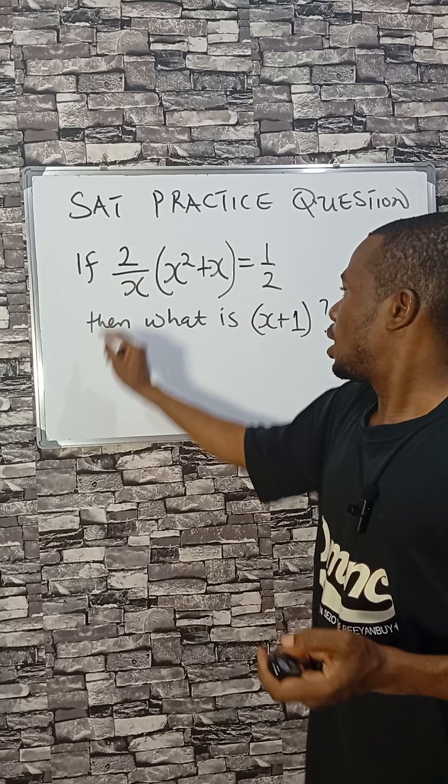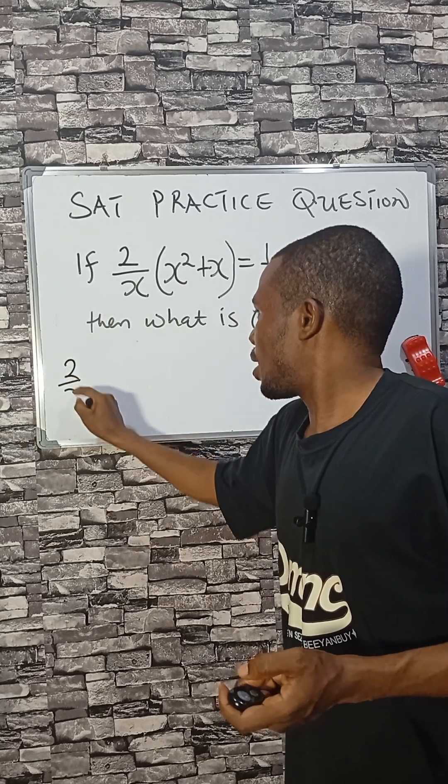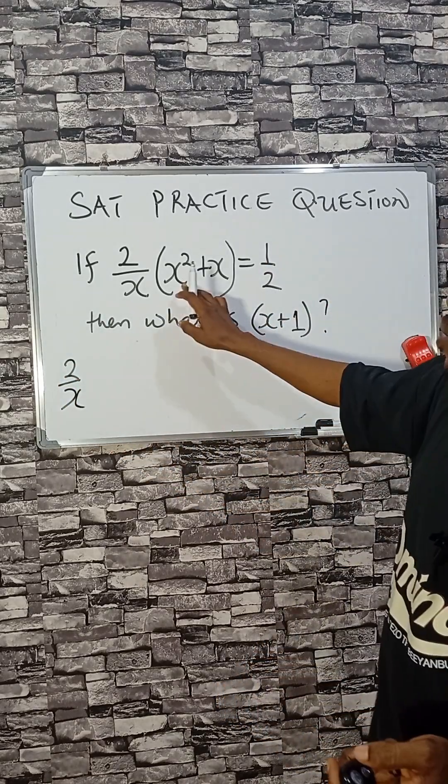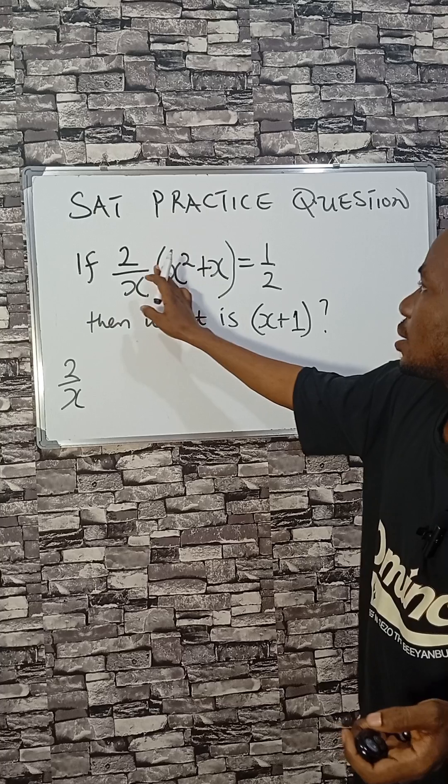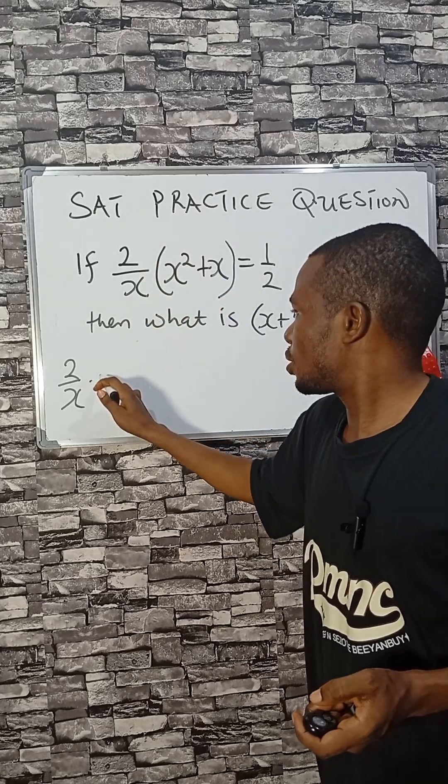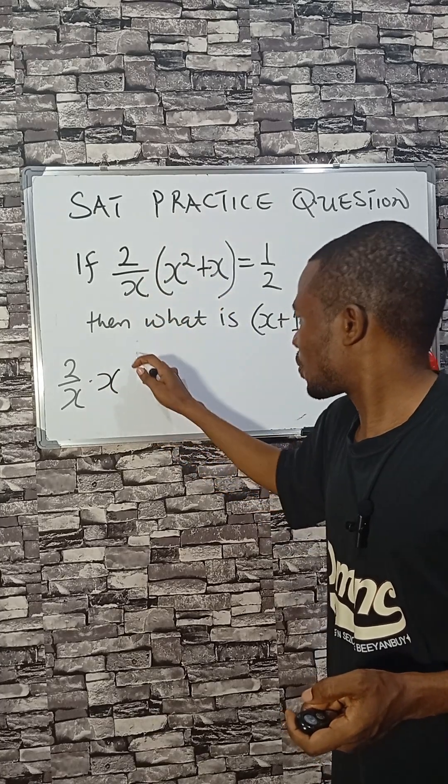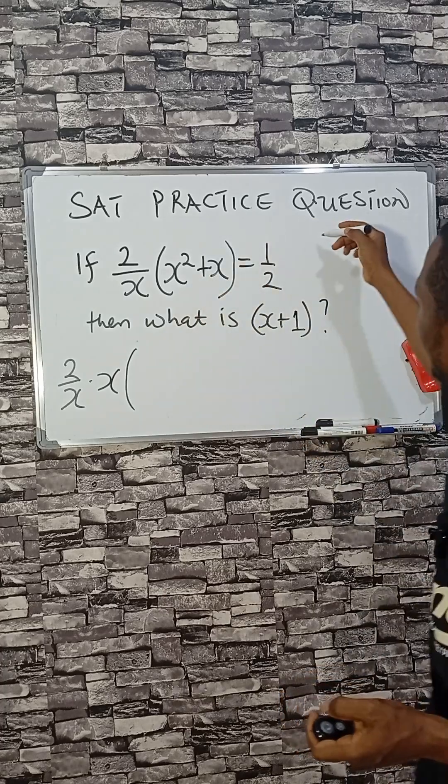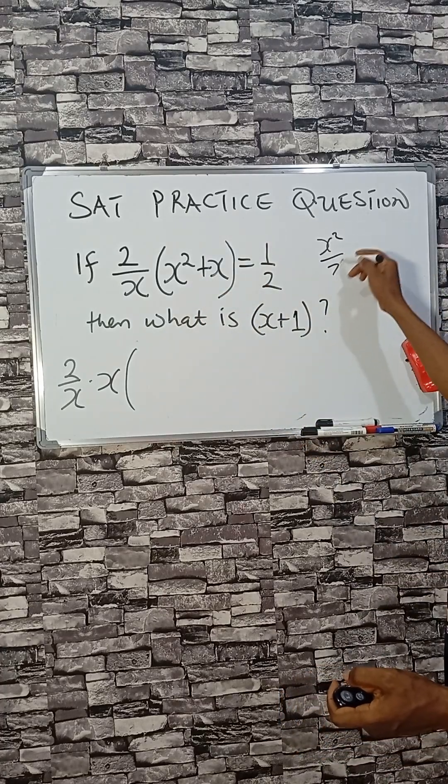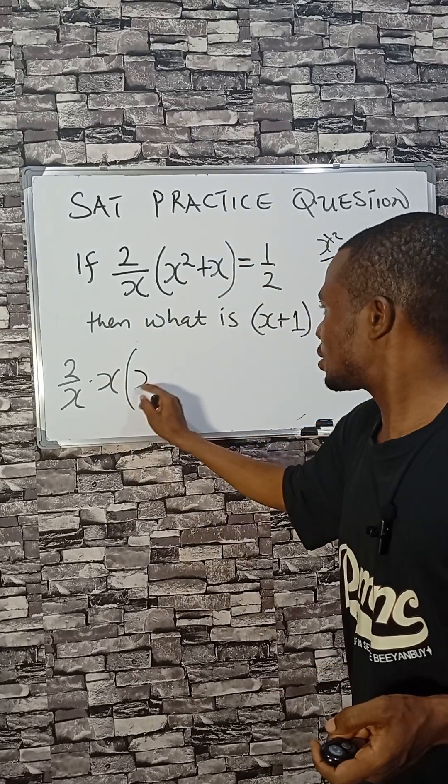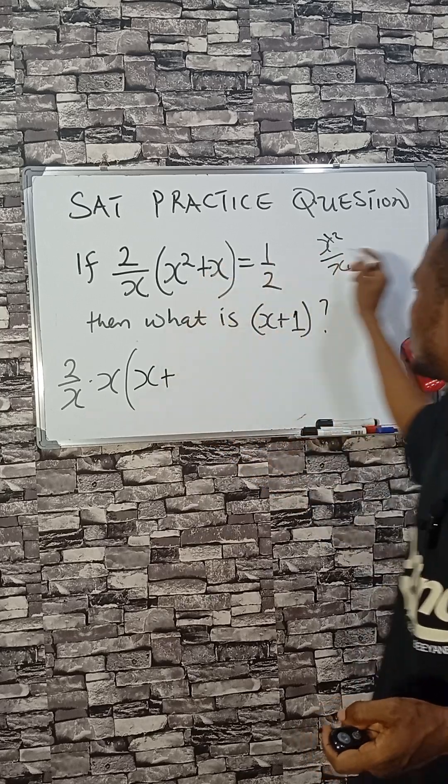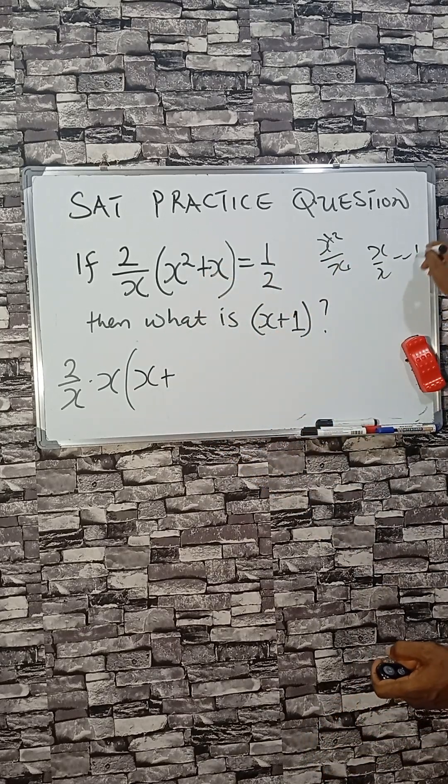Now, 2 divided by x - what if I factorize? If I remove one x from this bracket, I will have this. You know, if I divide x squared by x, I will have just one x. This place, x divided by x, that would be one.